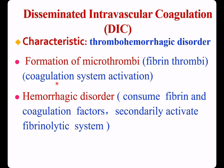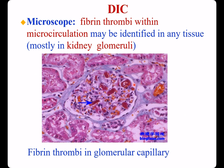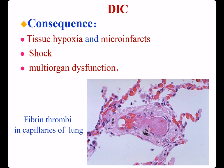Second feature: fibrin and coagulation factors are consumed. Subsequently, the fibrinolytic system is activated, and finally hemorrhagic disorder takes place. Under microscope, fibrin thrombi within the microcirculation may be identified in any tissue, mostly in kidney glomeruli. Here shows fibrin thrombi in glomerular capillaries, and this shows fibrin thrombi in capillaries of the lung.